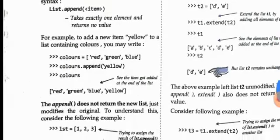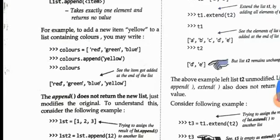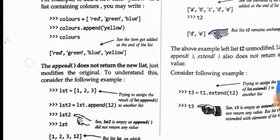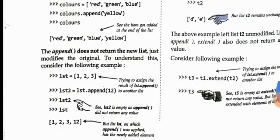The append() method adds a single element at the end of the list. For example, if colors = ['red', 'green', 'blue'] and you write colors.append('yellow'), the list becomes ['red', 'green', 'blue', 'yellow']. Note that append does not return a new list — it modifies the existing list in place.